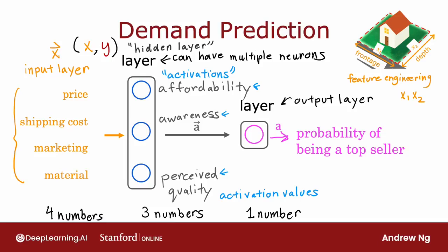One note: even though I previously described this neural network as computing affordability, awareness, and perceived quality, one of the really nice properties of a neural network is that when you train it from data, you don't need to explicitly decide what the features, such as affordability and so on, should be. Instead, it will figure out all by itself what features it wants to use in the hidden layer. And that's what makes it such a powerful learning algorithm.